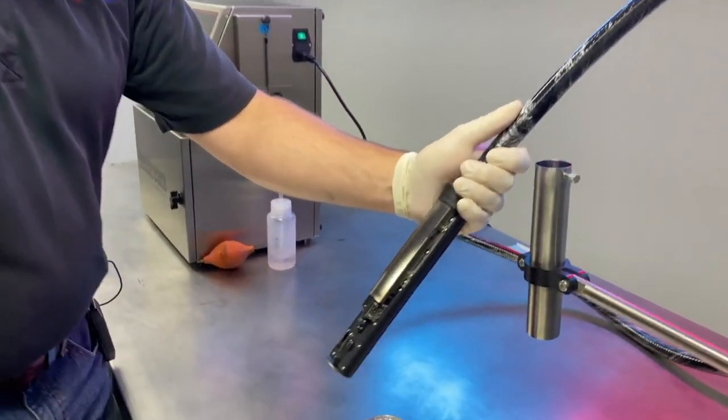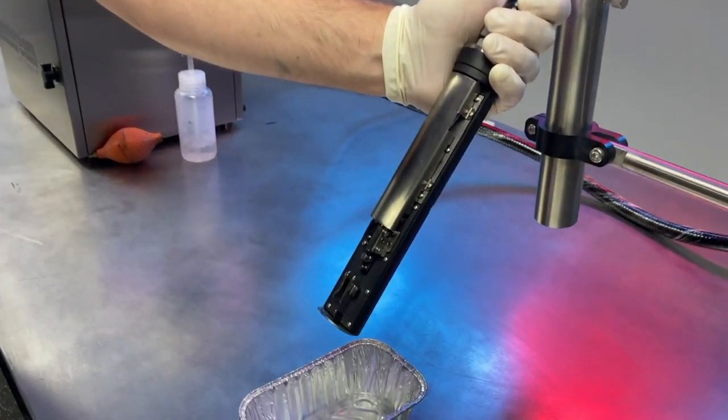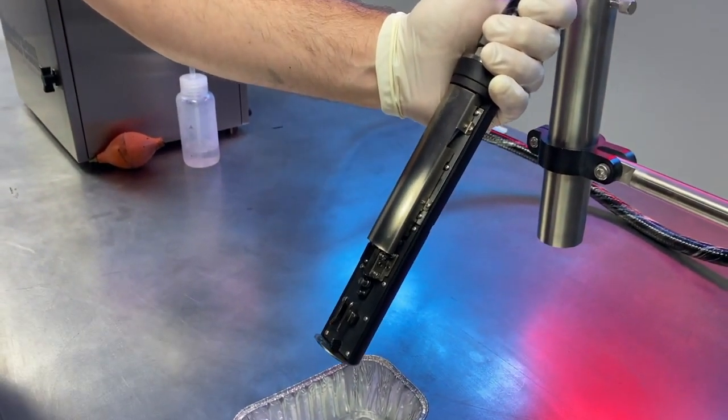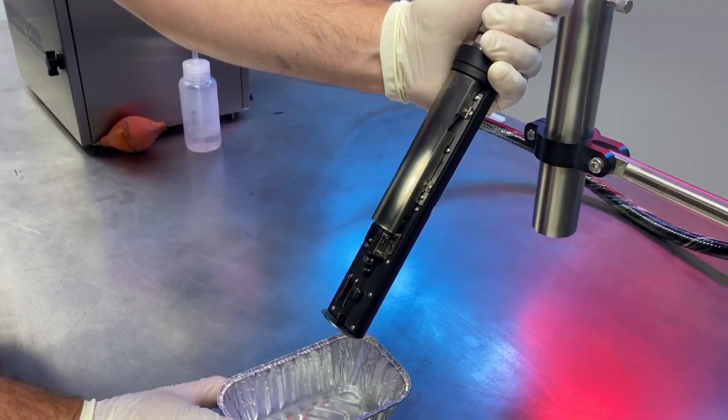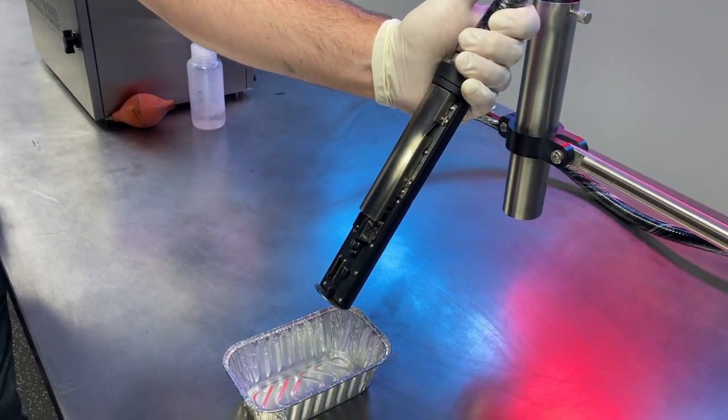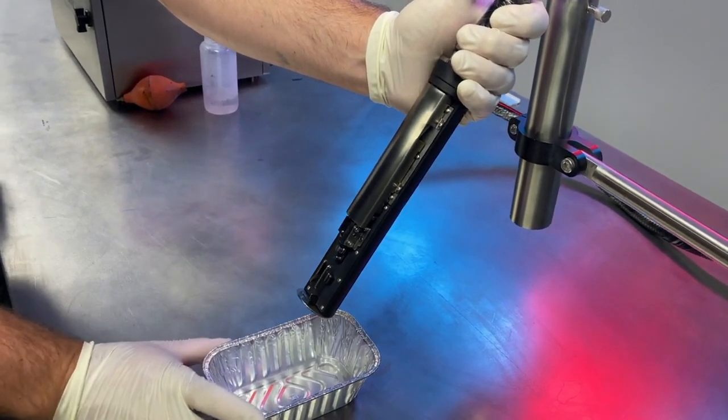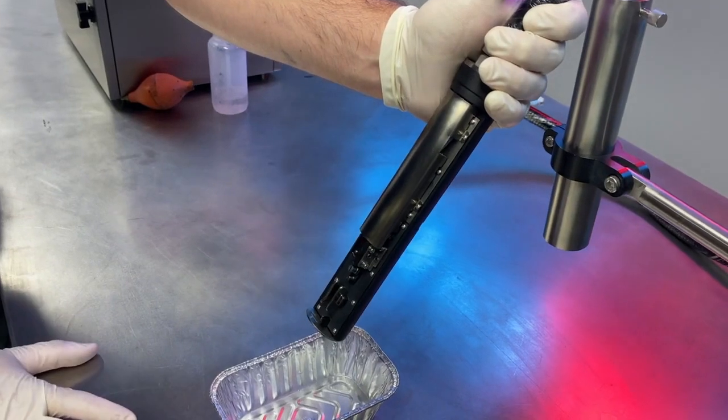And what we want to do is we'll get our print head over our little cleaning tray here that comes with the system, and if we do need to wash it off, this will collect any of that cleaning solvent.